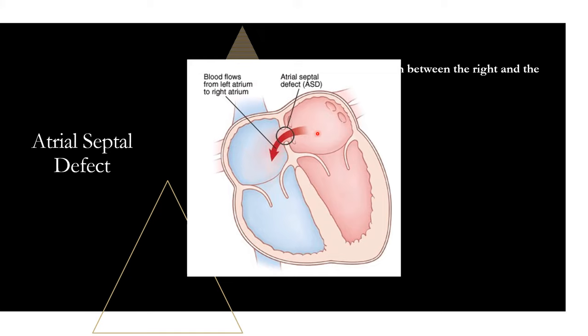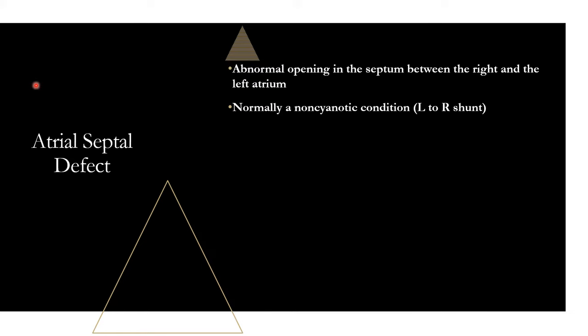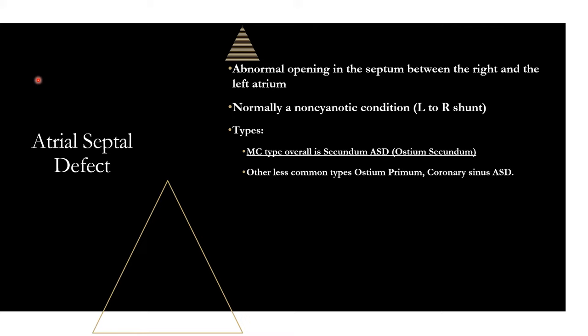Blood is going to be flowing, typically unless it reverses, from the left to the right side of the heart. There are a few different types, but don't remember all of them — just remember the most common. For ASD, the most common overall is going to be secundum ASD, also called ostium secundum, accounting for about 70% to 75% of atrial septal defects. Just remember secundum ASD as your most common type.